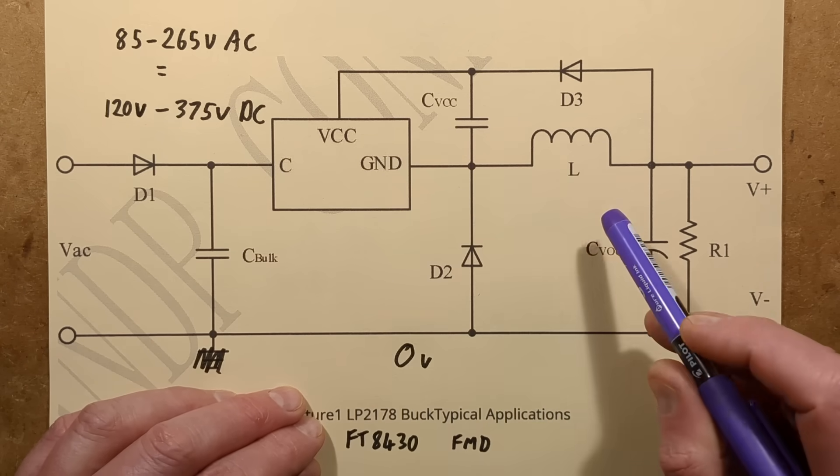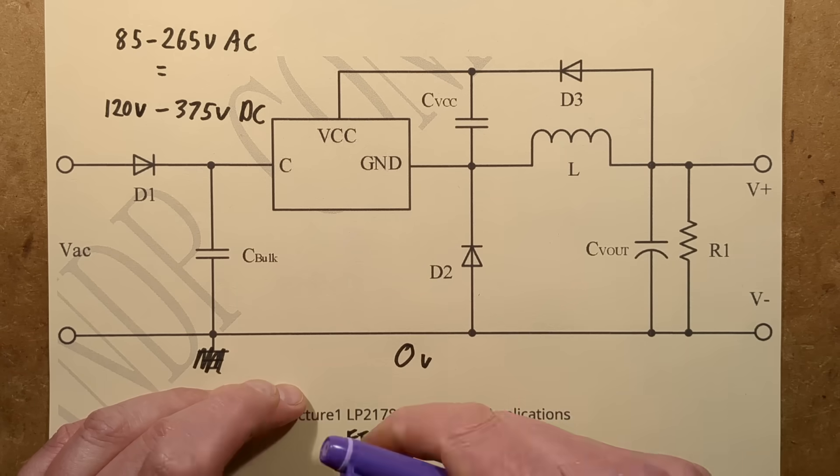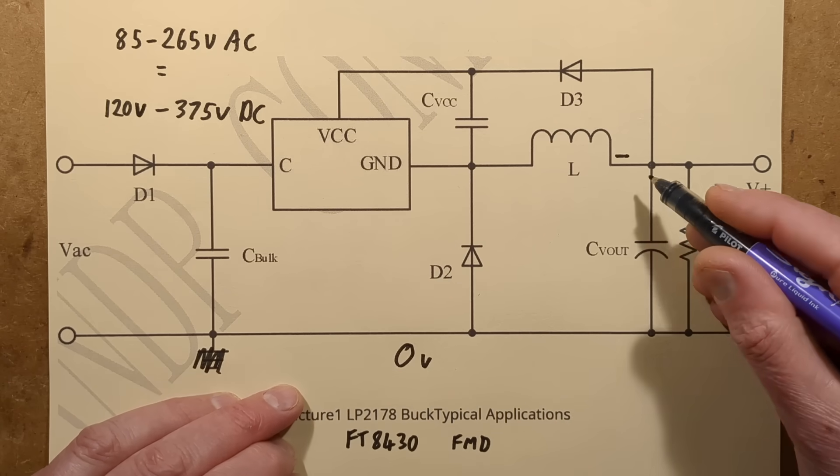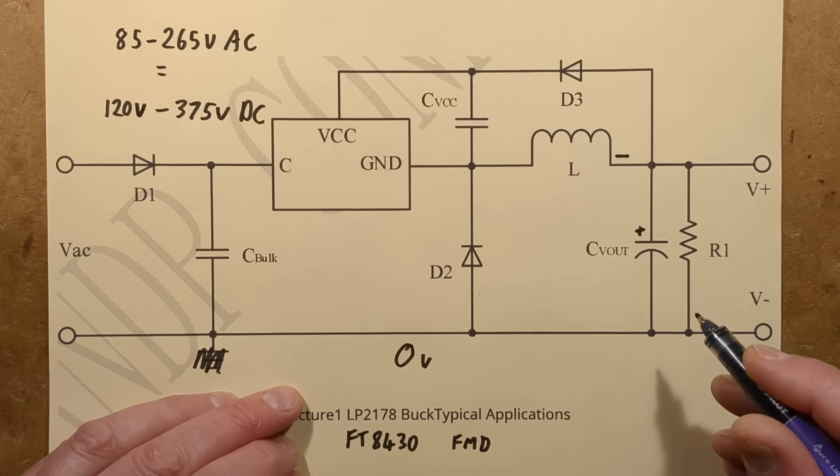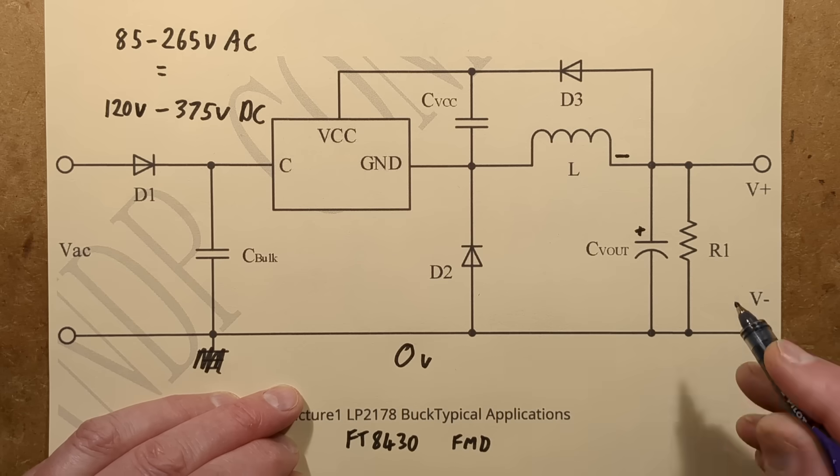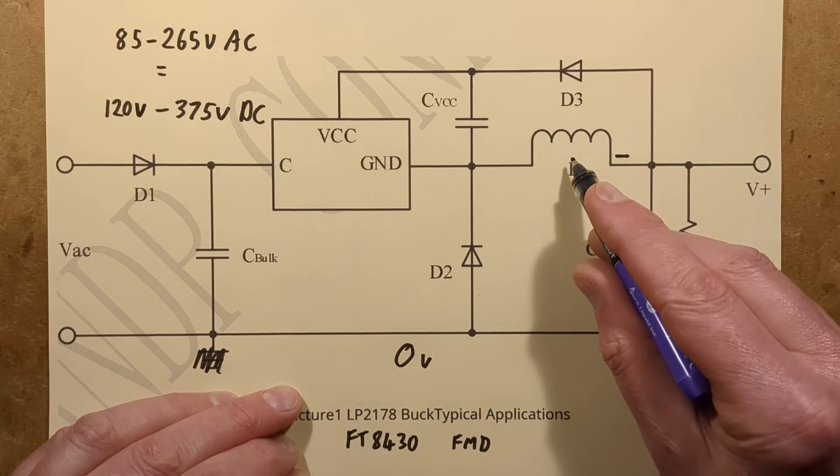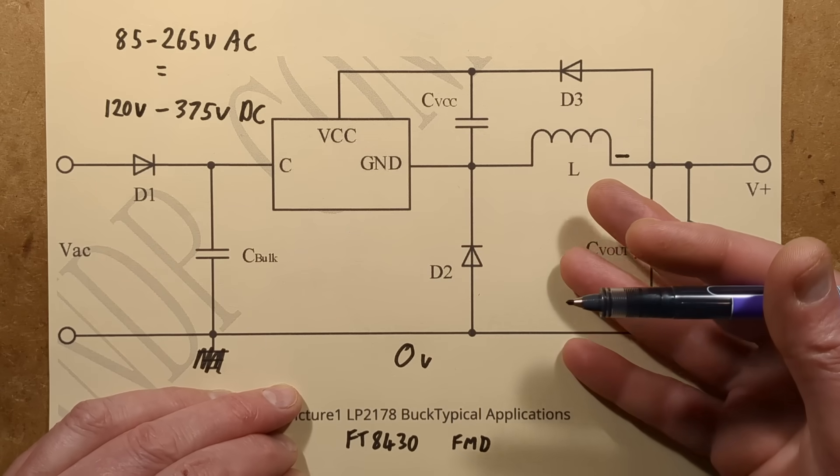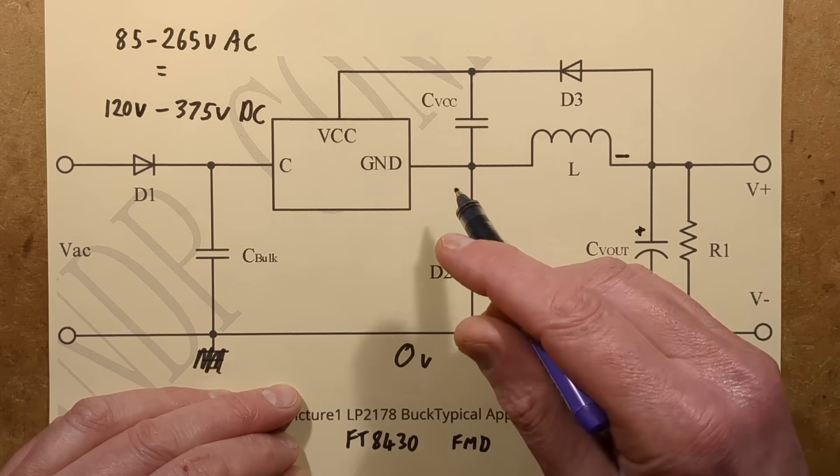What happens there is that this end goes positive of the inductor and this end is negative. I'll just mark it as negative. It starts charging this capacitor up here, so this positive side of that capacitor with respect to the other rail. Then it turns that inductor off.